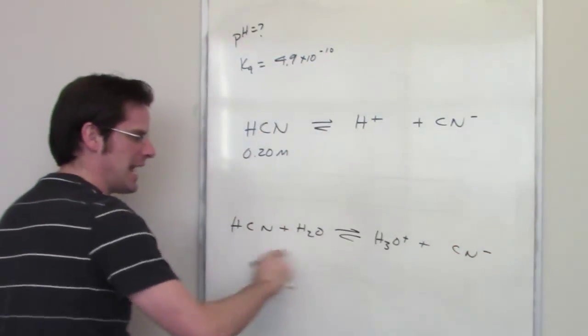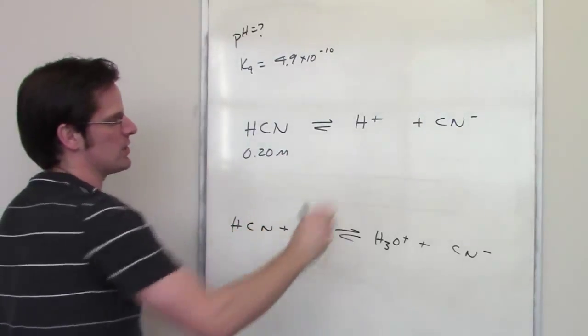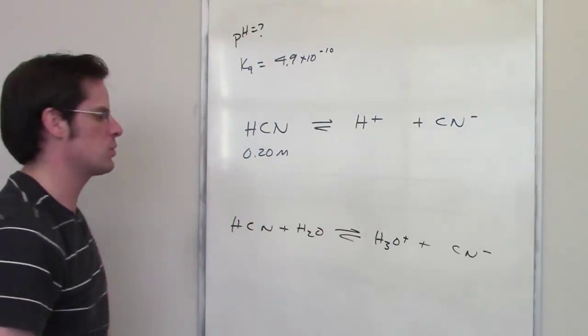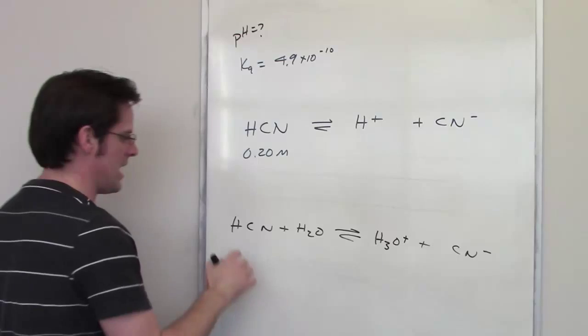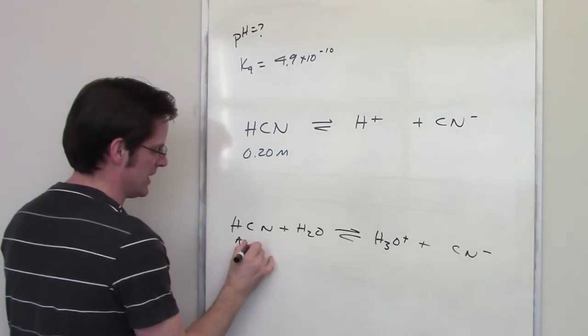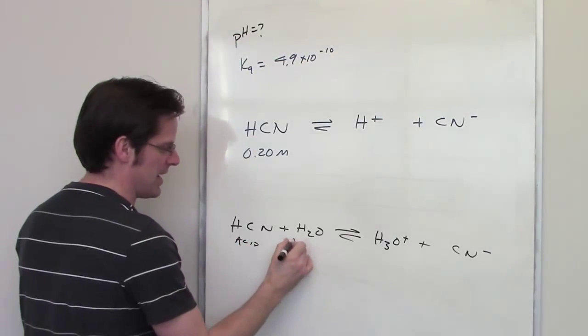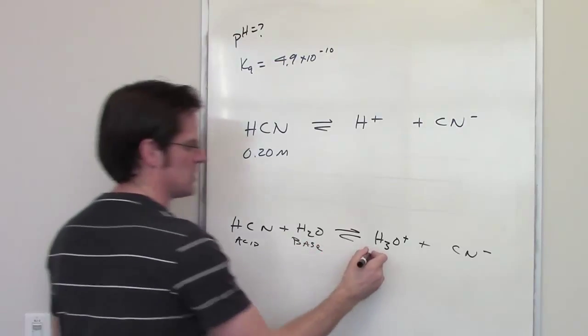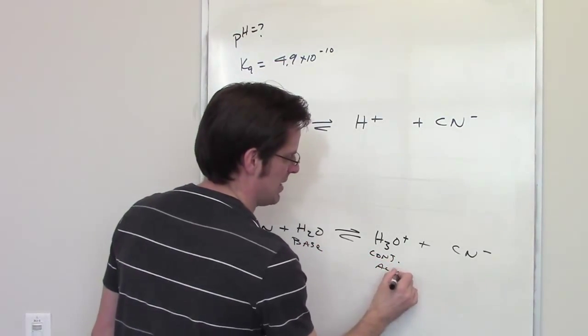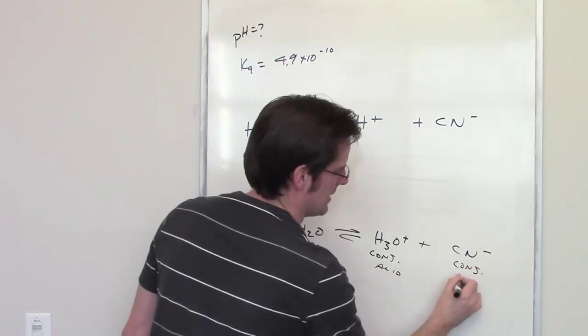This is what is actually happening. What we write up here is sort of the simplified, lazy person's way of writing it out. In case any of you care, because this is the thing releasing hydrogen, it's the acid. This is the guy accepting the hydrogen, it's a base. This becomes the conjugate acid, and this thing becomes the conjugate base.